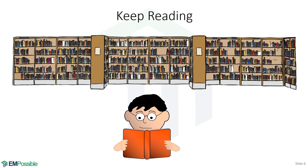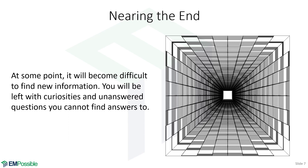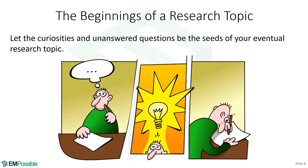Keep reading. Go to the library. Stay on the internet. Just read. So how do you know when you can stop reading? What you'll find — and this can happen in just a handful of days for a specific subject — is that at some point it's going to be very difficult to find new information. You're going to see people just regurgitating the same things over and over. And at the end of that, you're going to be left with certain curiosities or unanswered questions that you just can't find answers to. This is the sign that you're nearing the end of your literature search and becoming a subject matter expert. Let these curiosities and unanswered questions be the seeds of your eventual research topic — this only comes at the end of a pretty exhaustive literature search.